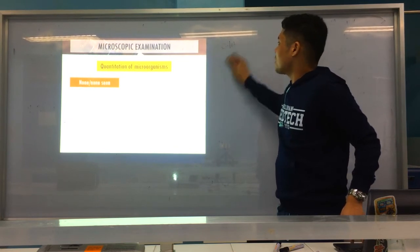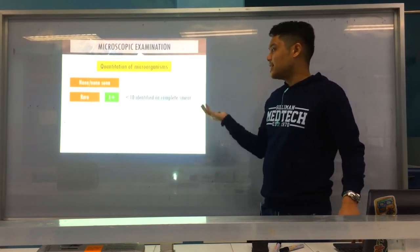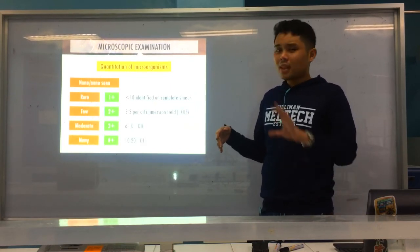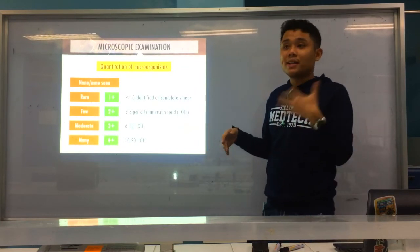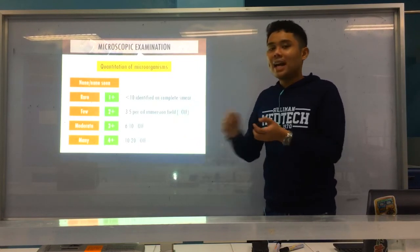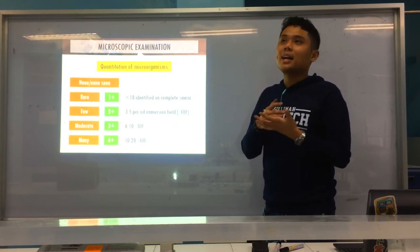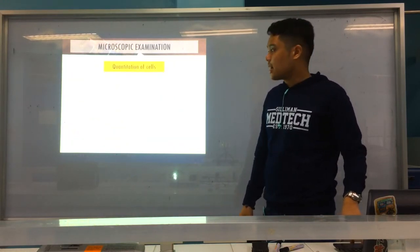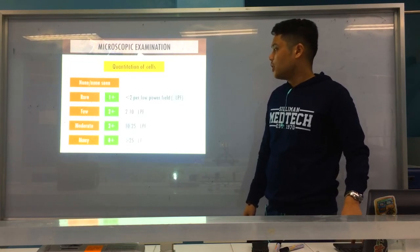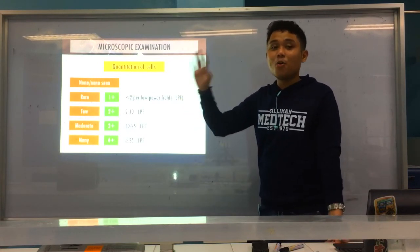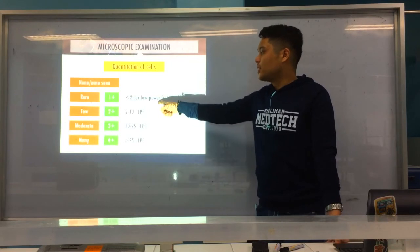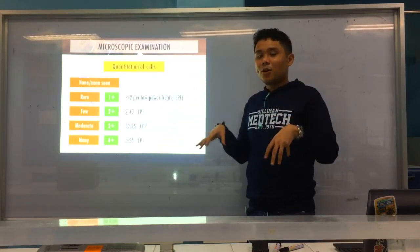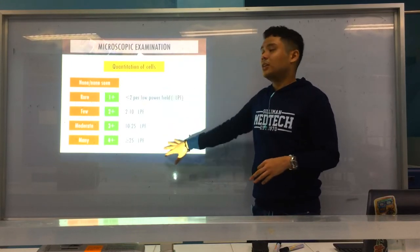And for quantitation of microorganisms, usually, if you can't find any, non-seen. Rare, 1 plus, less than 10 identified. Few, 2 plus, 3 to 5 per OIF. Moderate, 3 plus, 6 to 10. And many, 4 plus, 10 to 20. Now, their reporting, reporting of results usually depends on the institution or on the hospital. But theoretically, this is an average. Meaning, when you look at the whole smear, you average and estimate, there's about 3 to 5 organisms per OIF. So you report it as few or 2 plus. And for quantitation of cells, again, non-seen, less than 2 per LPF. LPF for cells you see under LPF. But for microorganisms or bacteria, it's OIO or OIF, because they can't be seen under LPO. So again, less than 2, 1 plus, 2 to 10, 10 to 25, and greater than or equal to 25 LPF, many. Again, the different meanings of many and 4 plus depend on the lab. But theoretically, this is what we follow.